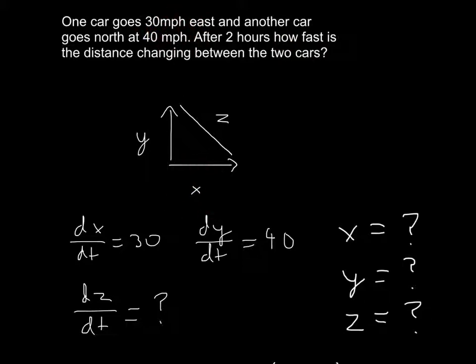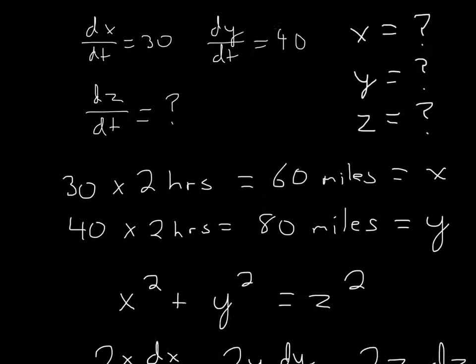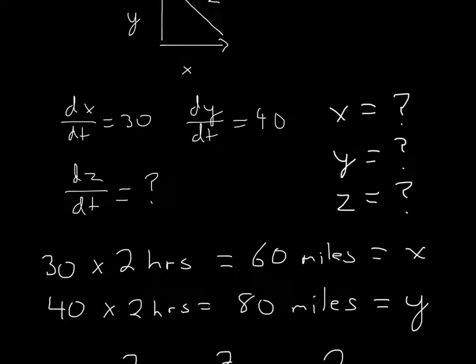What can we do with two hours that can get us a physical mile, not just miles per hour, a rate, but an actual number of miles? If you think about it, it's 30 miles per hour. That means 60 miles have elapsed. And here, 40 miles per hour, that means they've gone 80 miles in two hours.